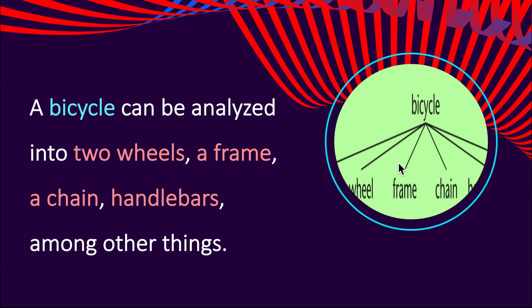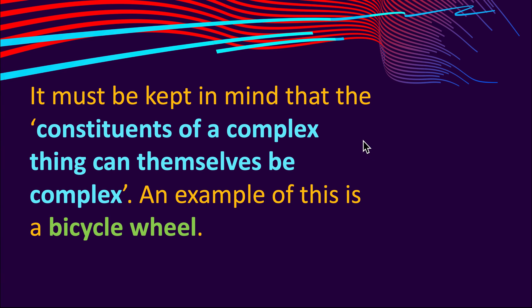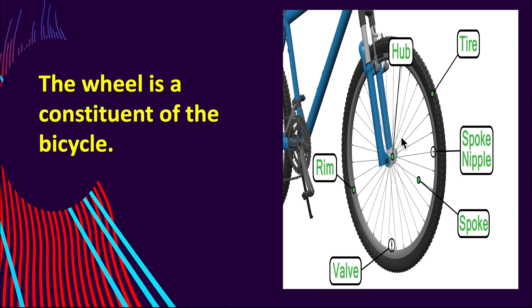Let's have an example to understand hierarchical structure through the parts of a bicycle. A bicycle can be analyzed into two wheels, a frame, a chain, handlebars, among other things. It must be kept in mind that the constituents of a complex thing can themselves be complex — an example of this is a bicycle wheel.